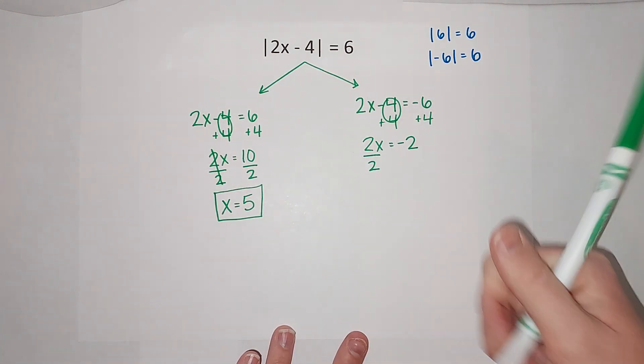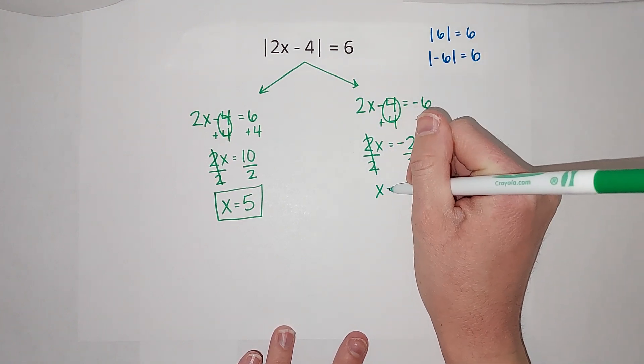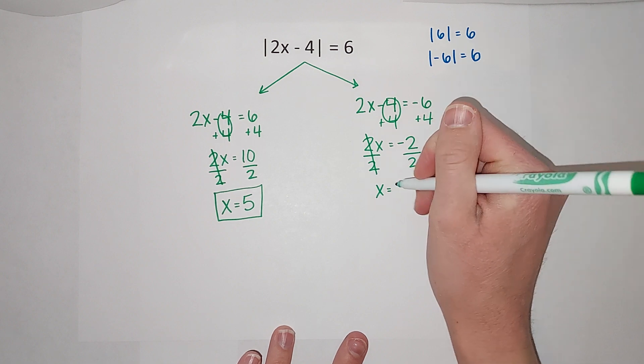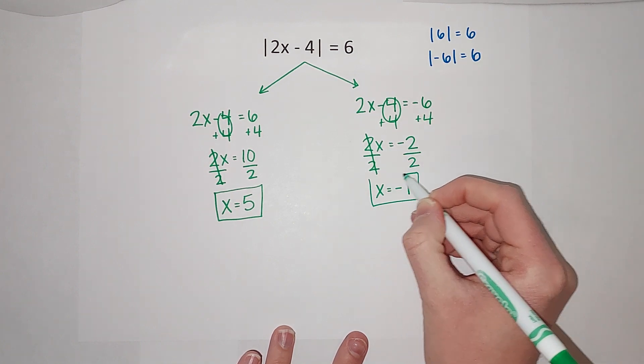If I do it on one side I need to do it on the other side to keep it balanced. So I've got x equals negative two divided by two gives me negative one. So there are two possible answers here.